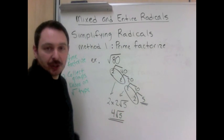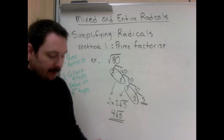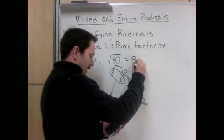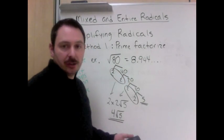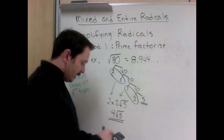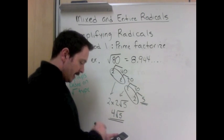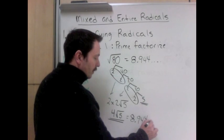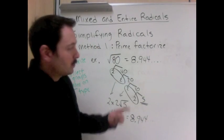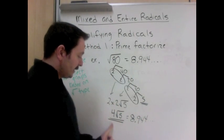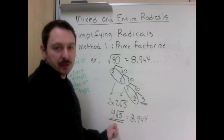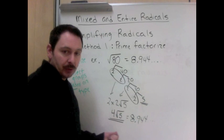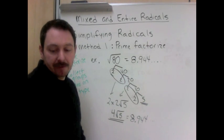This is the simplified version of square root of 80. And if you want to check to make sure they're the same, square root of 80 equals 8.944 and it's irrational, it keeps going. And if I did 4 times the square root of 5 it also equals 8.944 and continues. So they hold the same value but this is the simplified version because it has smaller numbers and there's nothing else that we can take. There's no roots that we can take out of that 5.